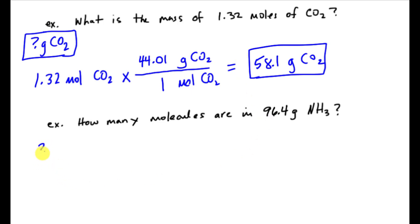Okay, so let's take a look at another one. The last one. How many molecules? So this is a little bit different. Here I'm looking for molecules of ammonia. Okay, so now we have to recognize that we have molecules here, not moles, but molecule. So therefore, this is a type of particle. But what I'm starting with is 96.4 grams of ammonia.